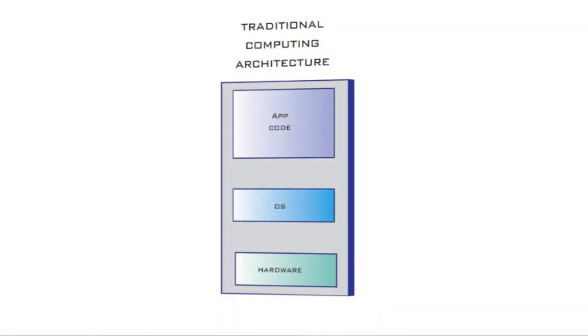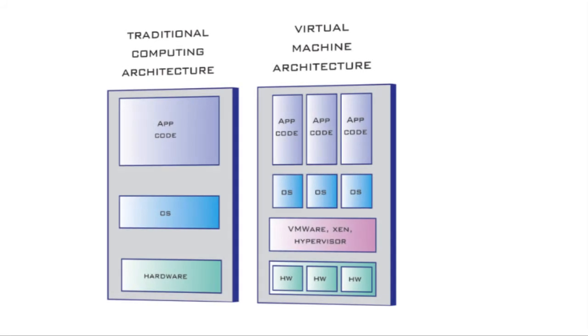In a traditional no-virtualization environment, you buy a piece of hardware, put an operating system on it, and put an application on top of it. In the virtual machine world, you buy a piece of hardware, put a hypervisor or some kind of virtualization layer, and that breaks the box into 5, 6, 8, 10 — on a high-end machine, maybe 50 virtual machines. Inside each of those virtual machines you have an operating system and then application code. So you'll have 50 instances of an operating system running on that piece of hardware. All of that is just overhead.